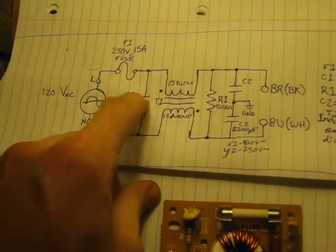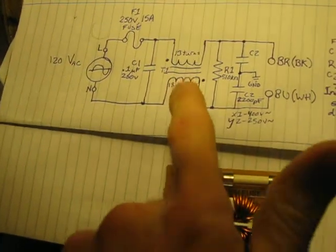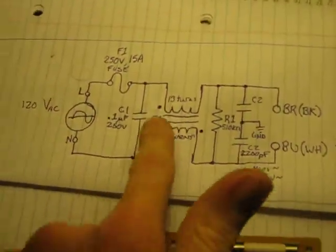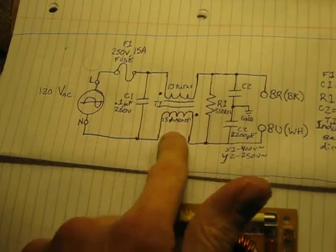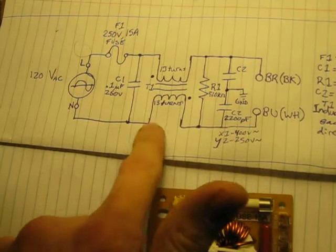And we've got a fuse, capacitor, this guy here. I guess you'd call it a transformer but it's got an equal number of turns on both sides of the core. They're just in opposite directions.